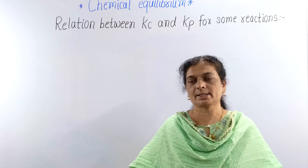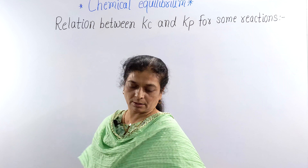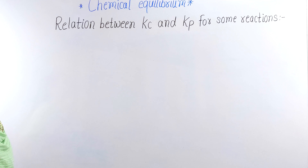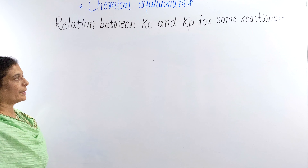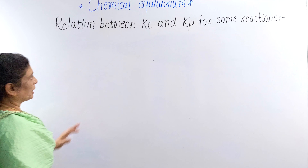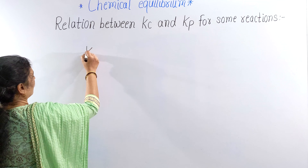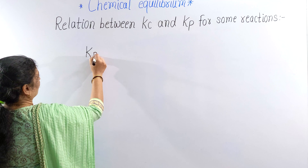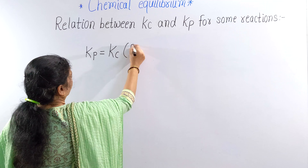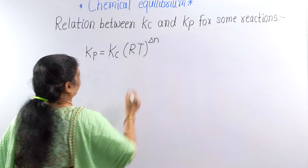Hello students. You know what is equilibrium constant in terms of concentration, represented by Kc, and equilibrium constant in terms of pressure, represented by Kp. You know what is the relation between Kc and Kp? Here, Kp is equal to Kc into RT raised to delta N.